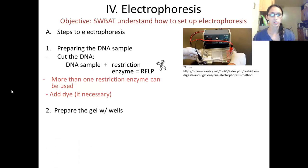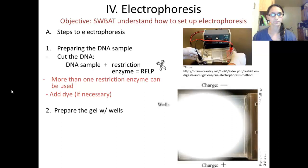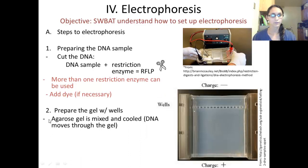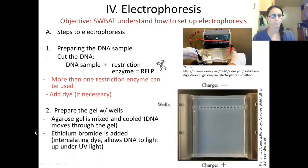Next we're going to prepare the gel with wells for our DNA sample. Here's an image of a gel and it has little wells for the DNA sample to go into. Agarose gel is mixed and then it's cooled. DNA moves through this gel. Ethidium bromide is added to the gel as well. It's a dye and it allows DNA to light up under UV light.